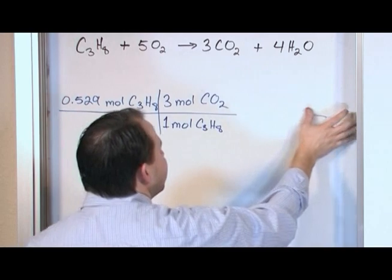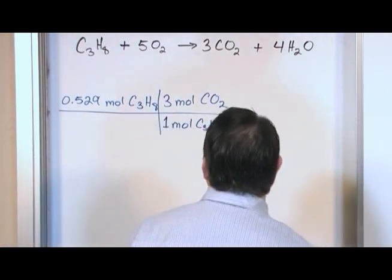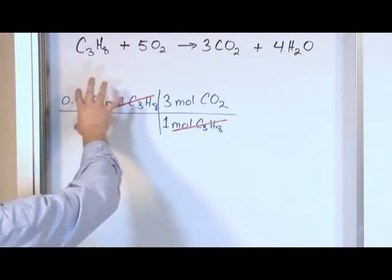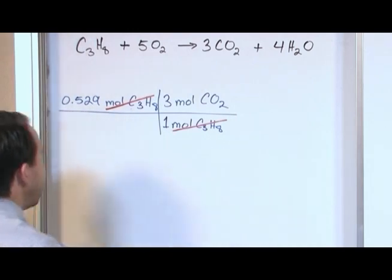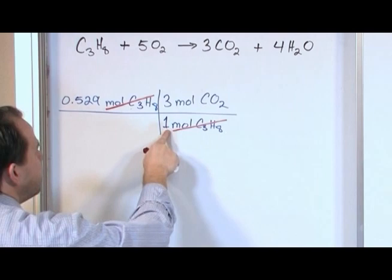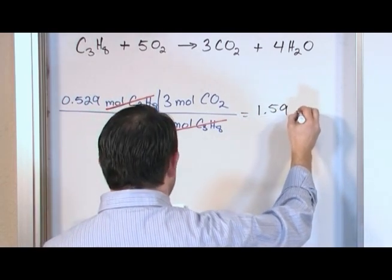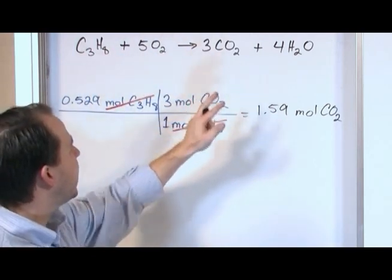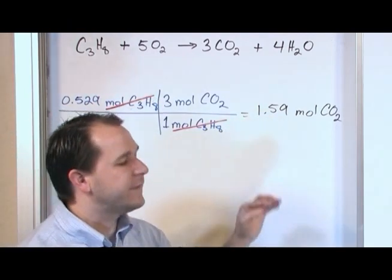Now anytime you write one of these conversion factors, you have the choice of flipping it either way. I could have written moles of C3H8 on top and moles of CO2 on the bottom, but that wouldn't cancel the units. Moles of C3H8 cancels with moles of propane, and the only unit left is moles of carbon dioxide, which is exactly what I'm trying to find. So you take 0.529, multiply it by 3, and divide by 1. Dividing by 1 doesn't do anything, so you get 1.59 moles of CO2 — that's how many moles are produced. You write down what you start with, find a ratio from your reaction to cancel units, and the unit you're left with is what you're trying to find. We take this times 3 divided by 1 and get 1.59 moles of carbon dioxide.